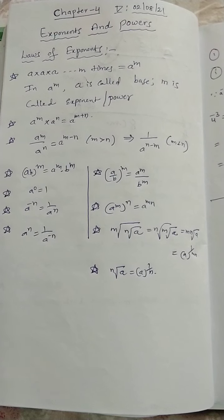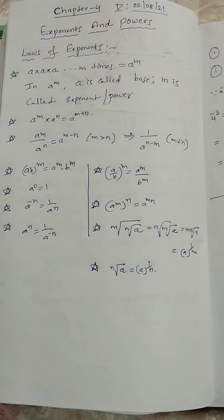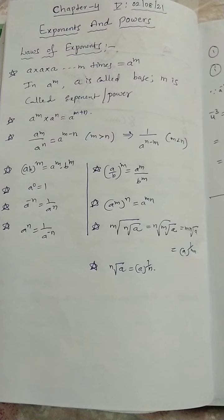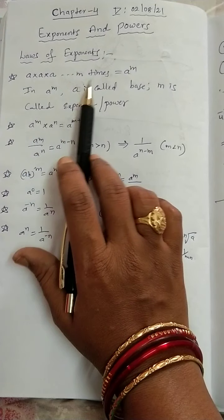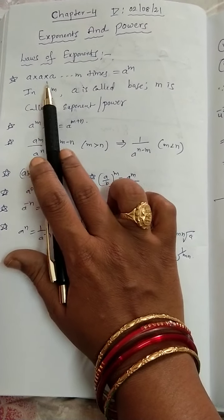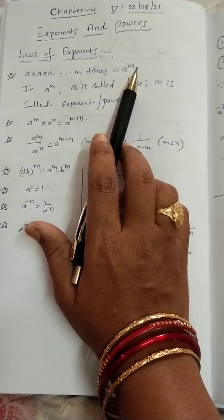Before going to that, firstly, how to know the exponent, what is power and laws of exponents, means that formulas. See here, if you take A and M times, A into A up to M times, so we can write as A power M. M times, we are writing.